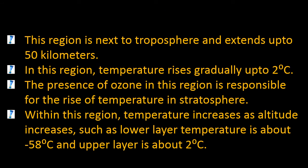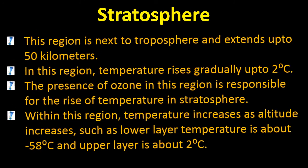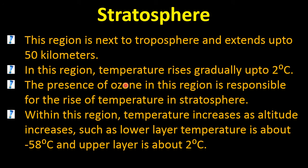The stratosphere is next to troposphere and extends up to 50 kilometers. In this region, temperature rises gradually up to 2 degrees Celsius. The presence of ozone in this region is responsible for the rise of temperature in the stratosphere. This is the answer to why temperature rises in stratosphere — because of the ozone layer. Within this region, temperature increases as altitude increases; the lower layer is about minus 58 degrees Celsius and upper layer is 2 degrees Celsius.